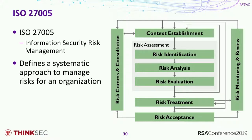That brings us to ISO 27005, the ISO 27000 series standard related to risk management. Its process diagram is very similar to what we saw from NIST 830, with a couple of small modifications: it also includes risk treatment and risk acceptance, because 27005 talks about the overall risk management process — not just the risk assessment process that NIST 830 addresses.